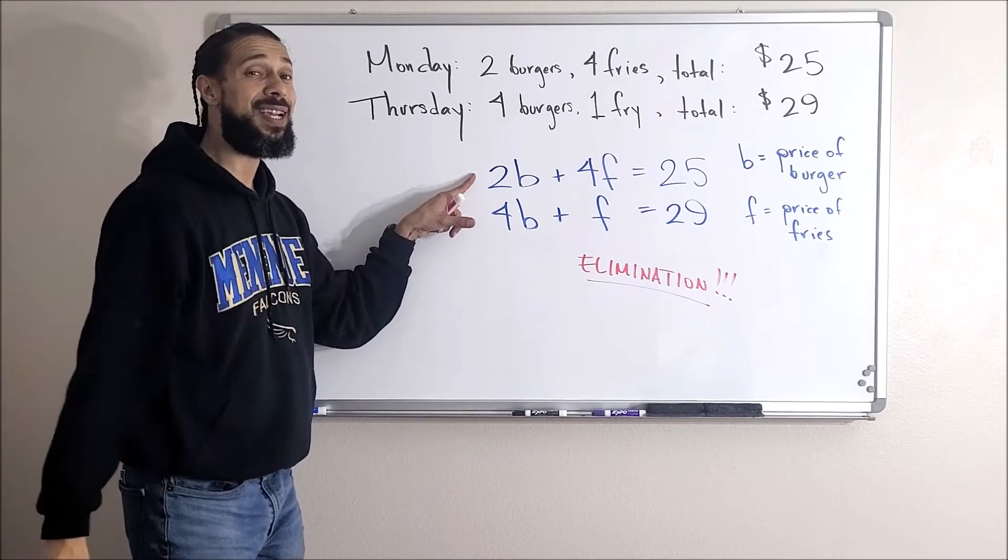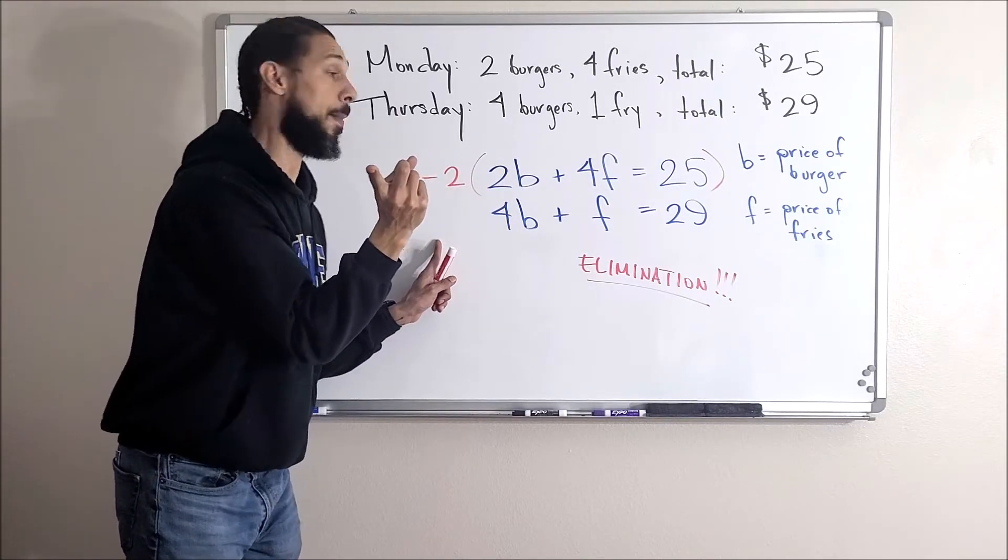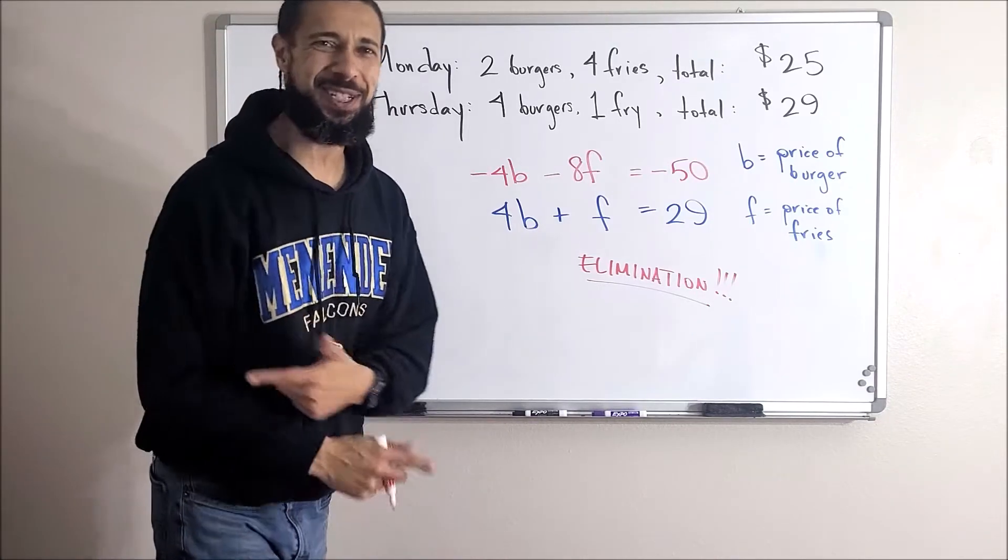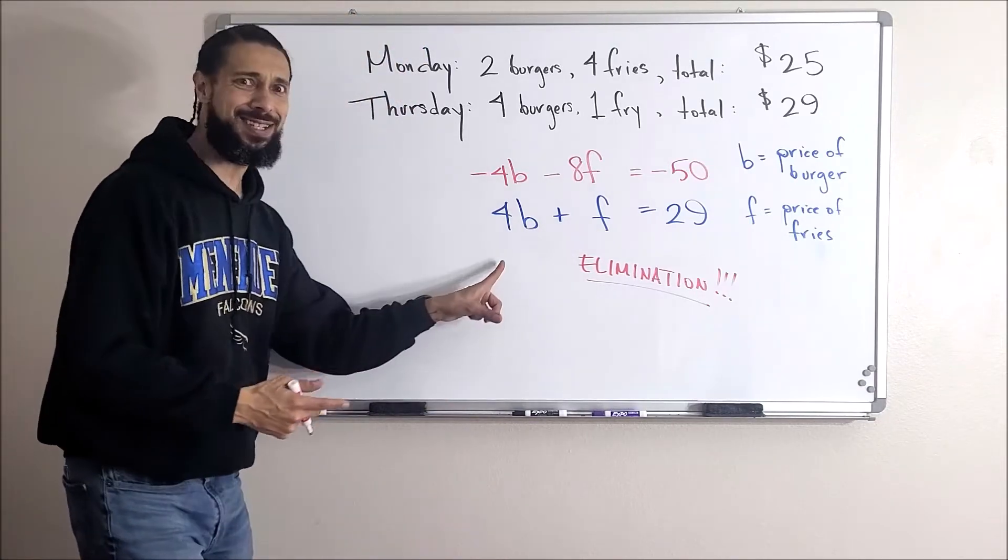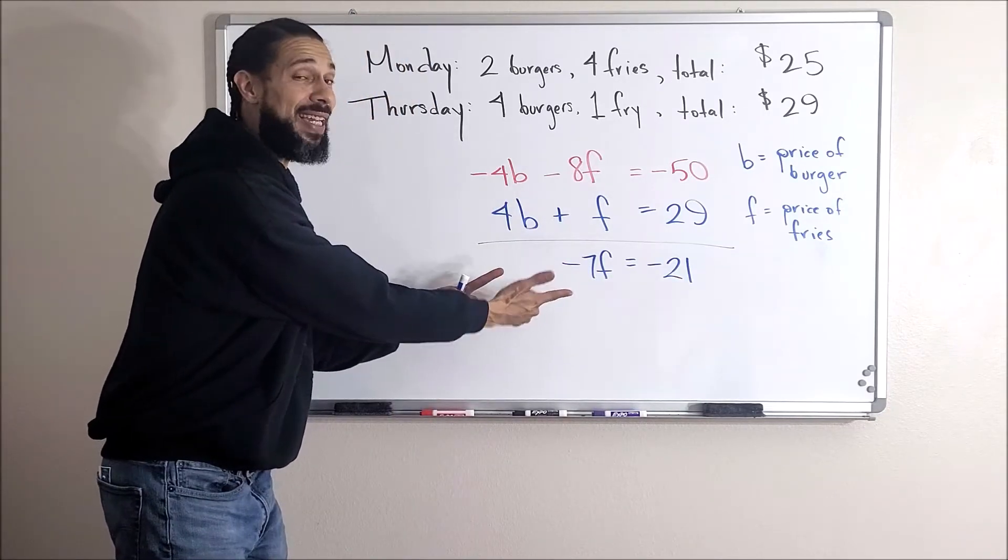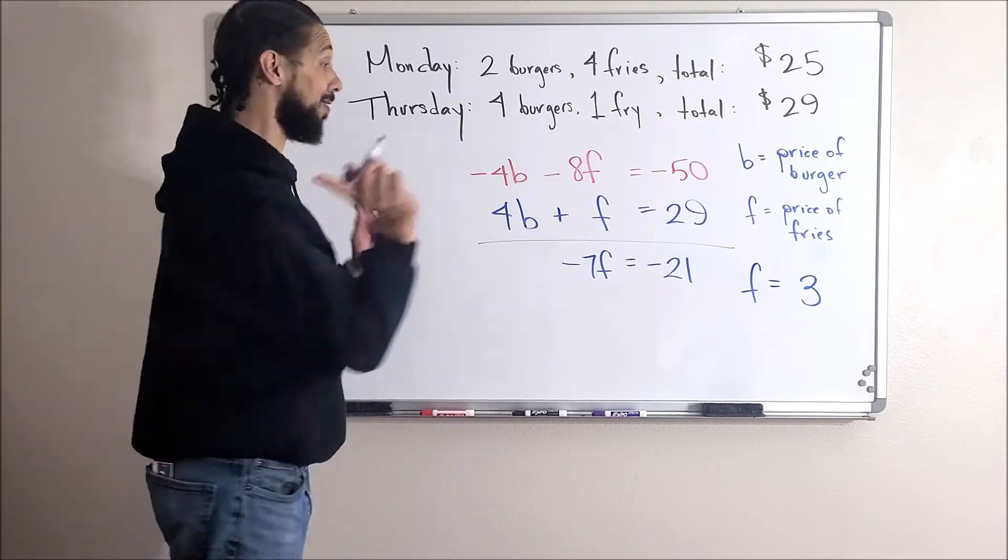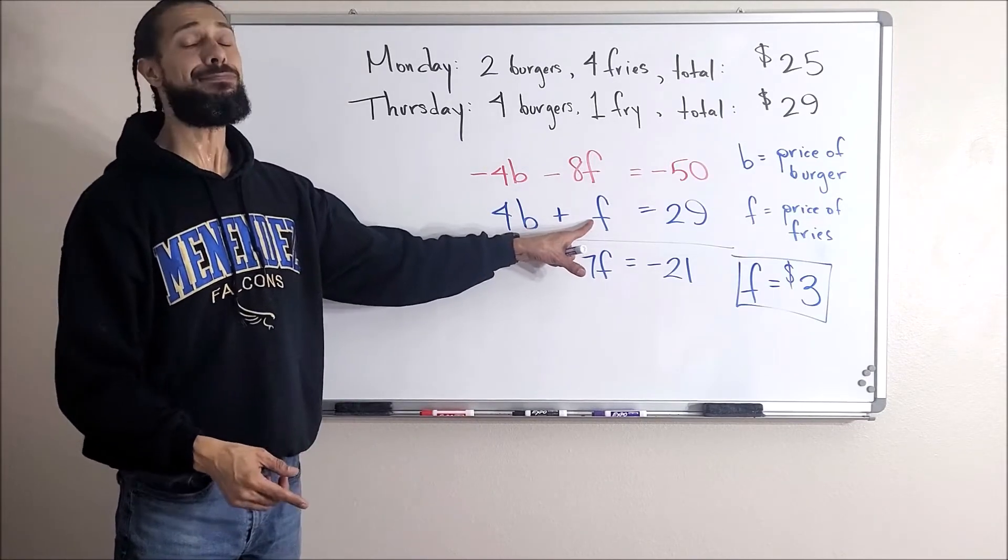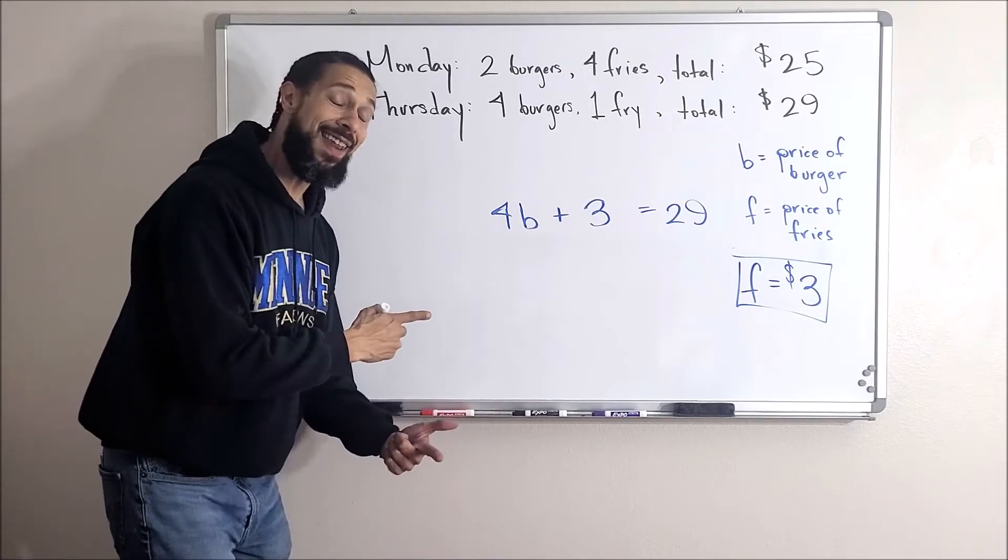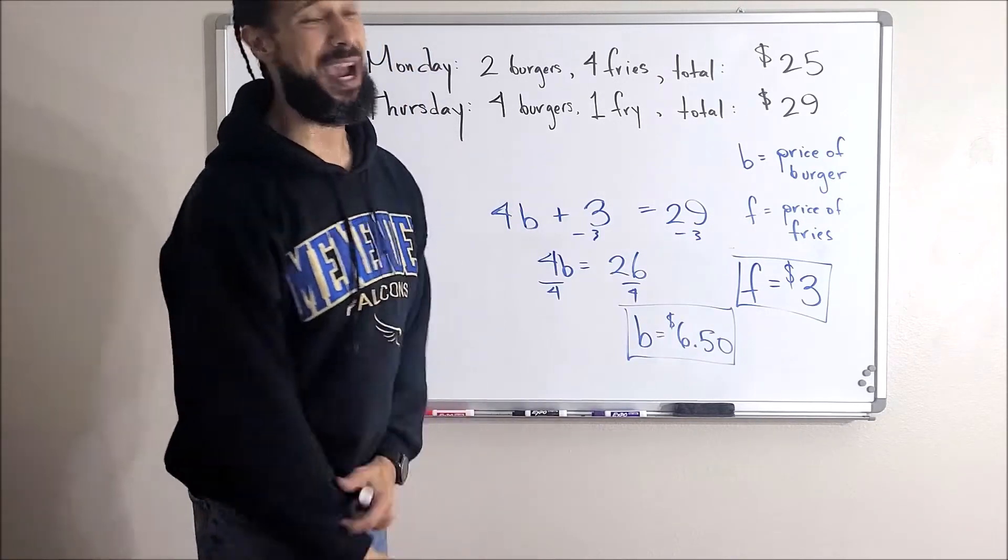Just like that, now these will eliminate. Let's go ahead. When I divide both sides by negative seven, I get f equals three. The price of fries is three dollars. So I just plug that back in here, and then a burger costs six dollars and fifty cents. Fries cost three bucks. We got time for one more.